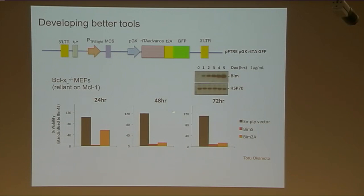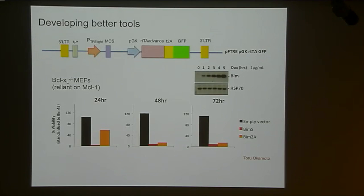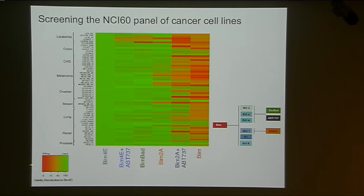We tested this in fibroblasts. If you engineer fibroblasts to be completely reliant on MCL1 — fibroblasts deficient in BCL-XL — these fibroblasts over a period of time are killed by BIM expression, and they're also killed by BIM2A. Armed with those tools, Freya looked at a whole panel of tumour cell lines available — the NCI-60 panel — examining the sensitivity of each line to either the BIM variant or to BH3 mimetics, plotting the results as a heat map of viability.